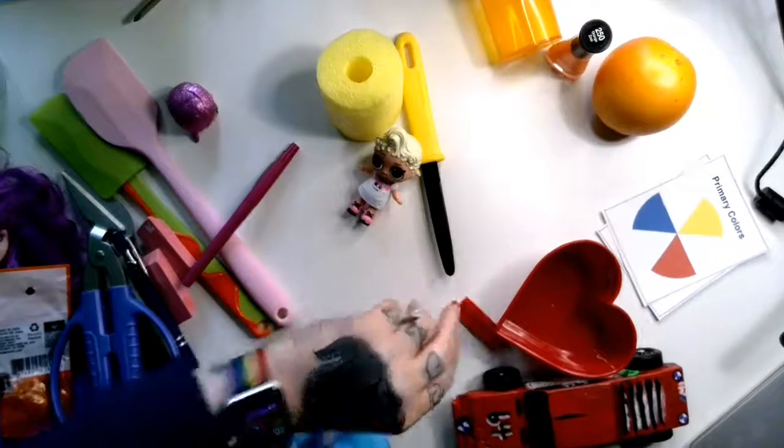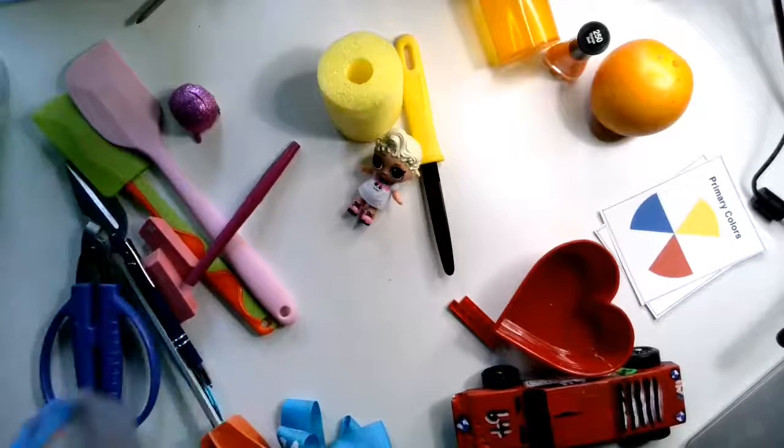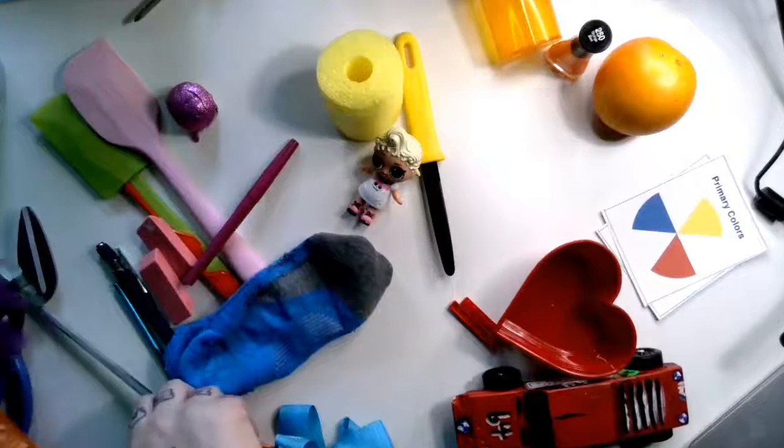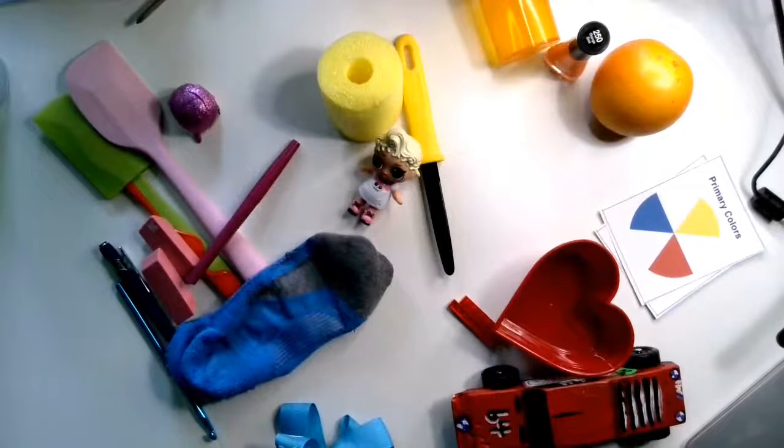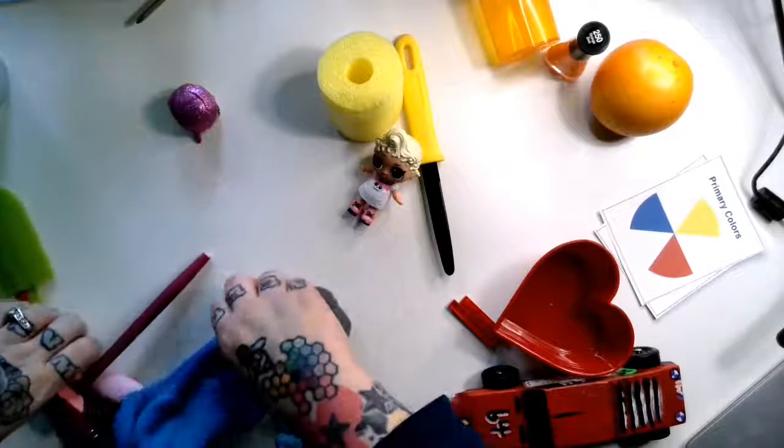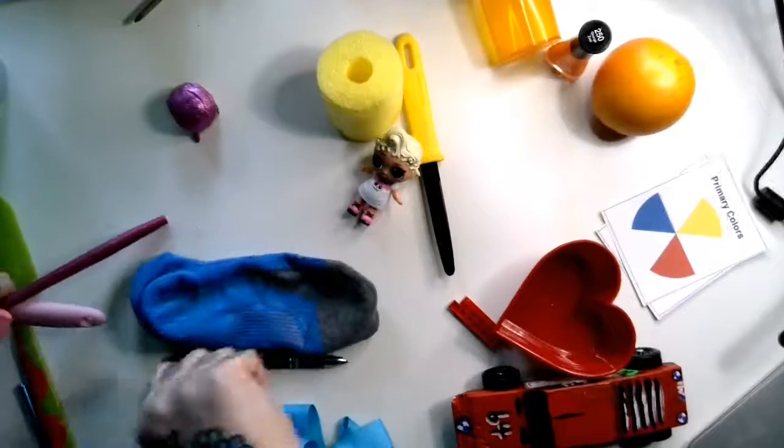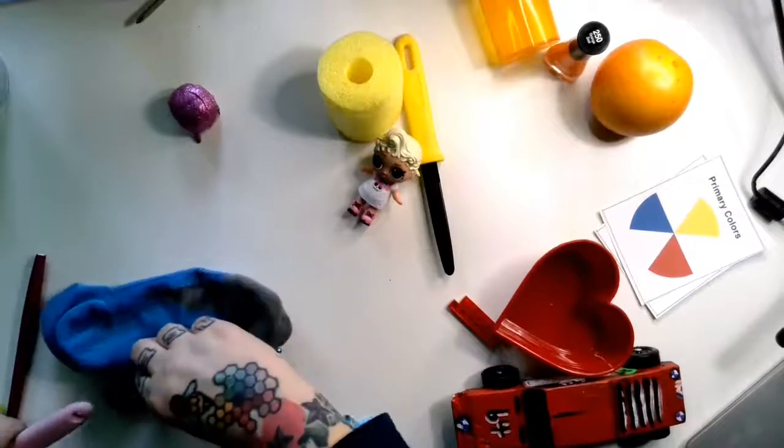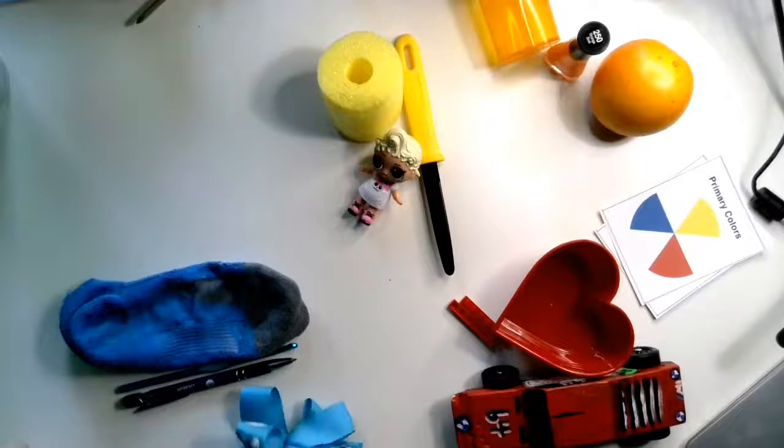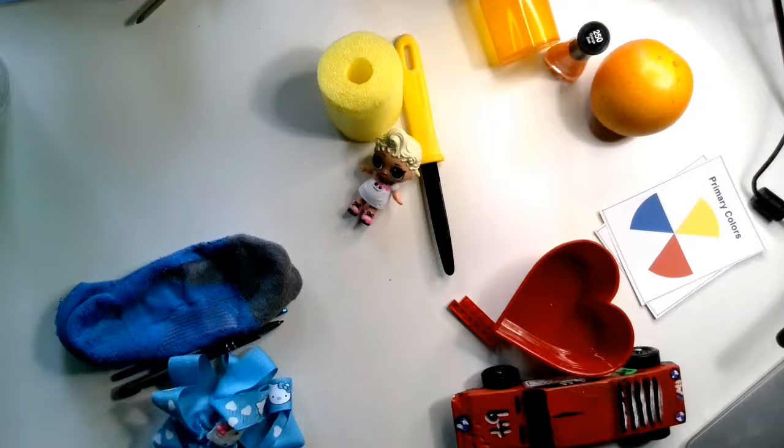And next I'm going to look for my things that are blue. So I got a sock. I promise the sock was clean when I started this. But I got a sock, I got a pen, I got a crochet hook, and I got a Hello Kitty bow.